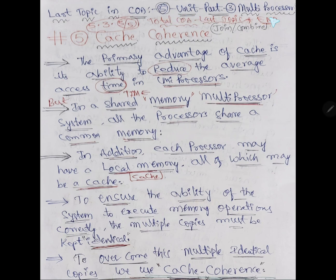This is the topic from the fifth unit, third chapter. In fifth unit we have three chapters. First chapter is RISC and CISC, second chapter is pipelining and vector processing, and the third last chapter is multiprocessors. Multiprocessor means many processors.